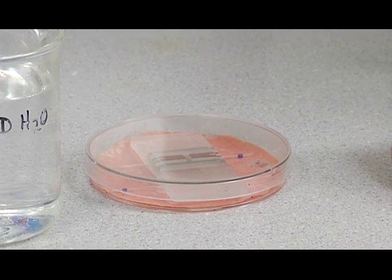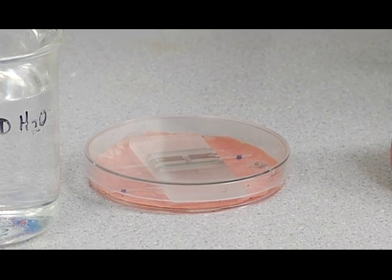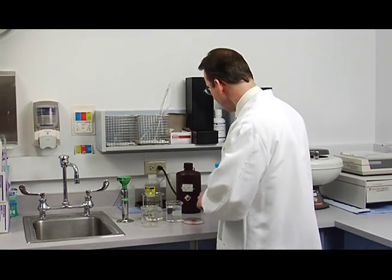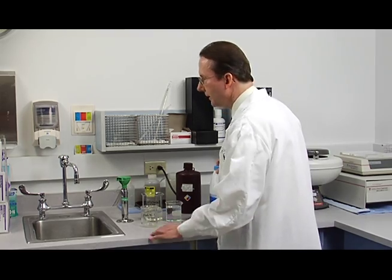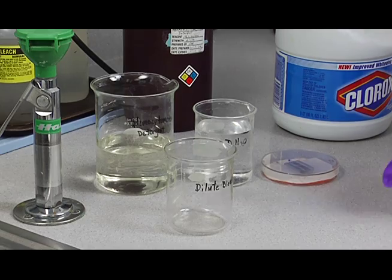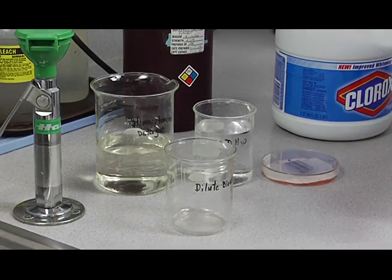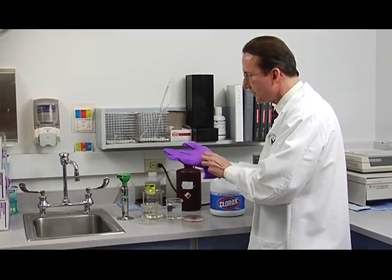Before you perform the manual cell count, you need to wash your hemocytometer. It needs to be thoroughly clean. The first step of that is to get your reagents and solutions ready. So you'll need to put on some gloves for that.